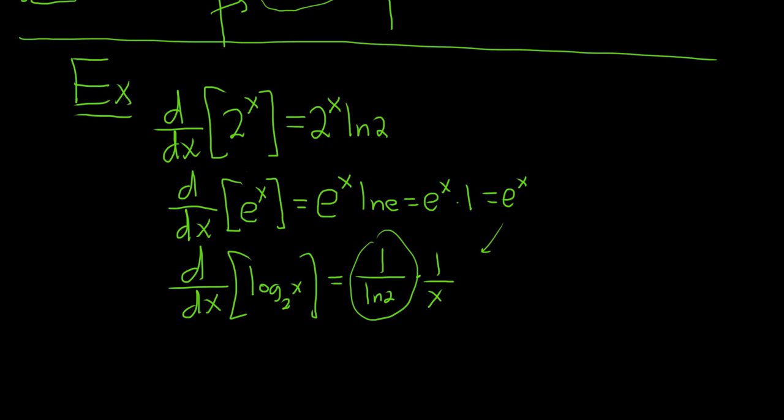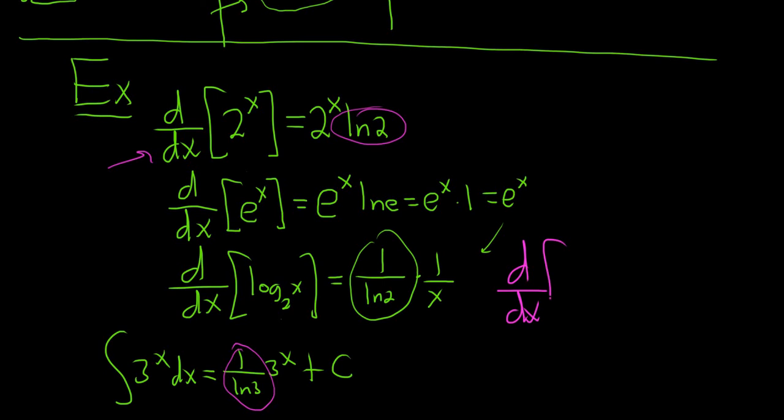So when you differentiate, you multiply. And then when you integrate, which we'll do now, you divide. So it's 1 over ln 3, 3 to the x plus C. So when you integrate exponentials, you divide by the ln of the base. When you differentiate, you multiply by ln of the base. So one more, just to make the point, say we had d/dx of 4 to the x. We're differentiating, so we multiply by the ln of the base. But if, say again, one more time, say we had to integrate, then you would divide by the ln of the base.